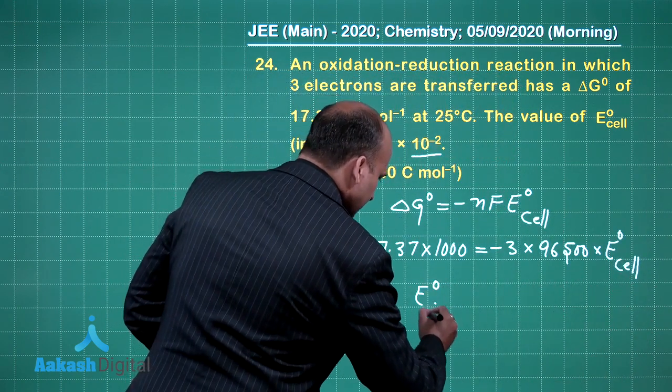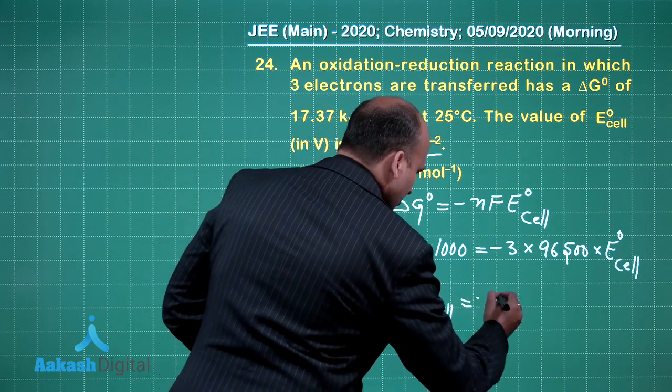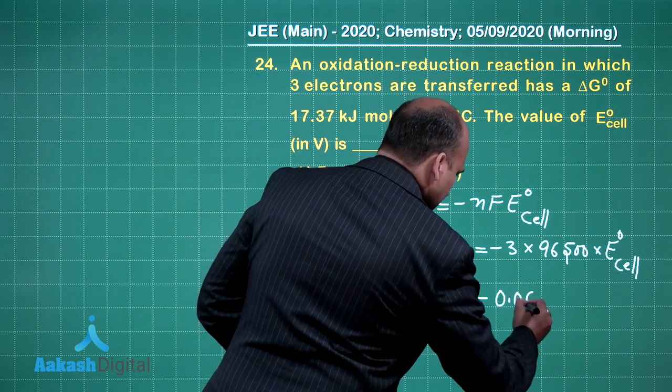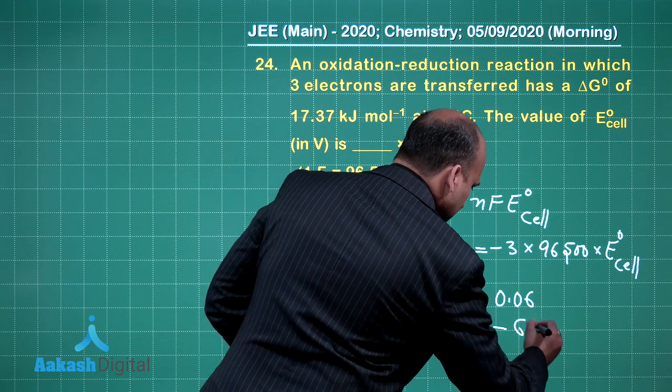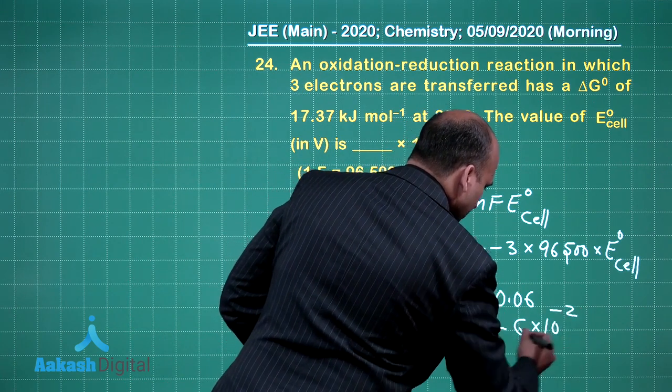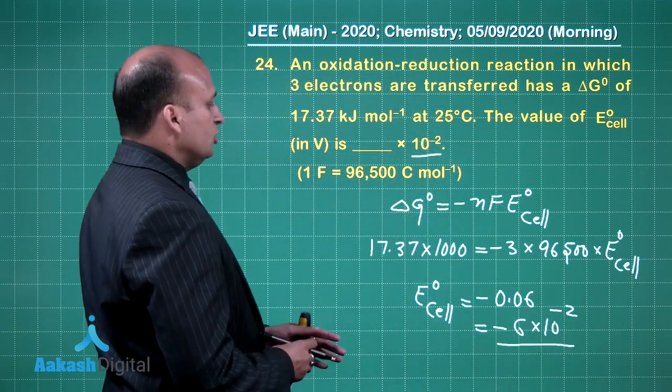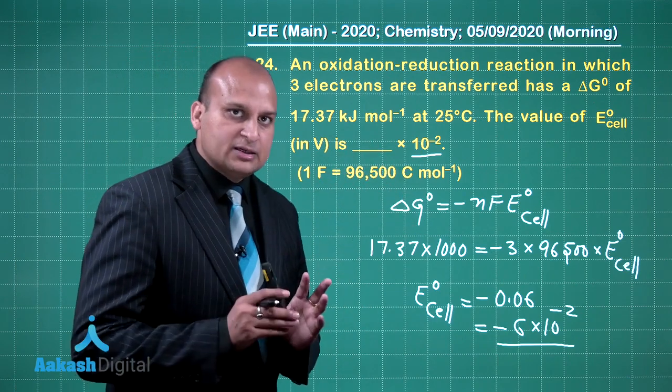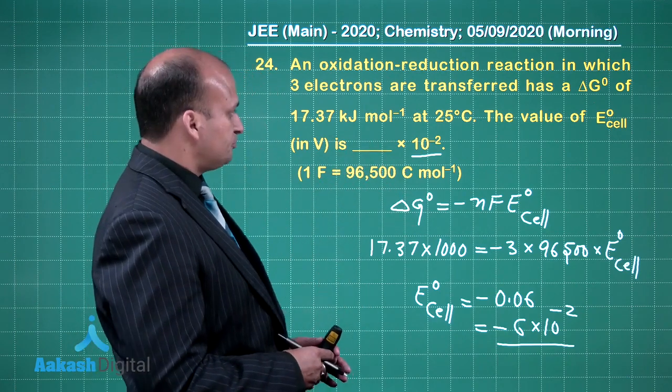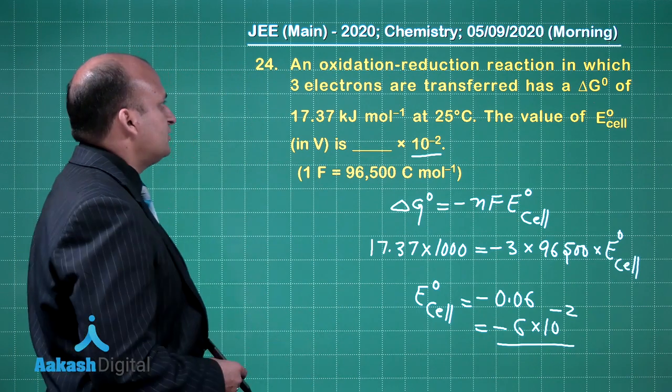When you solve it out you will get E°cell equals minus 0.06, which can be written as minus 6 times 10 to the power minus 2. So the right answer in this blank should be minus 6. Now let us look at the next question.